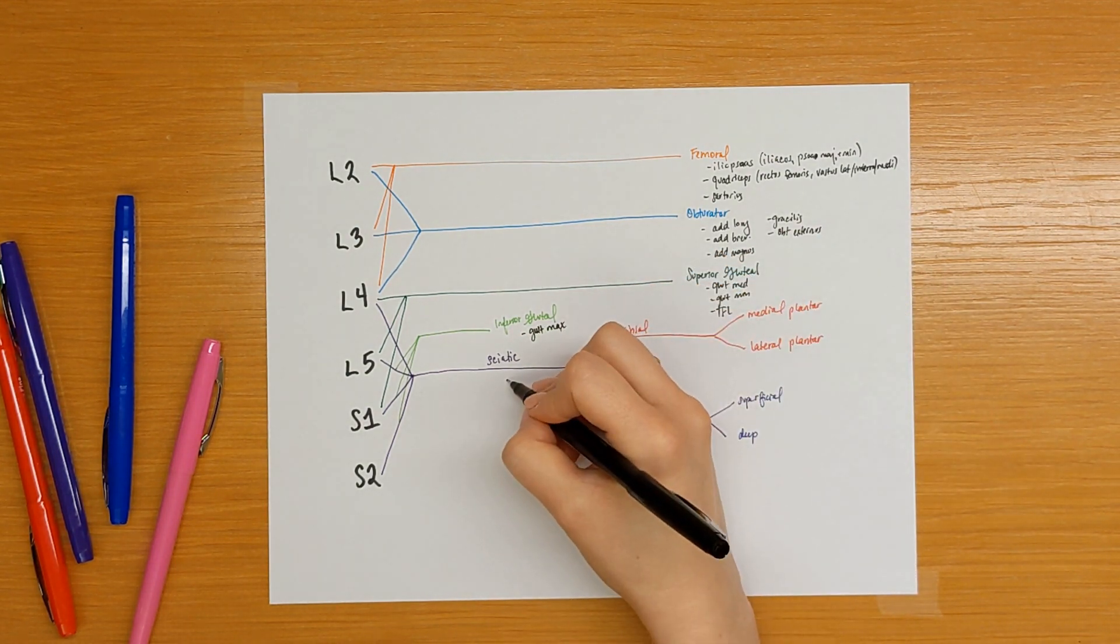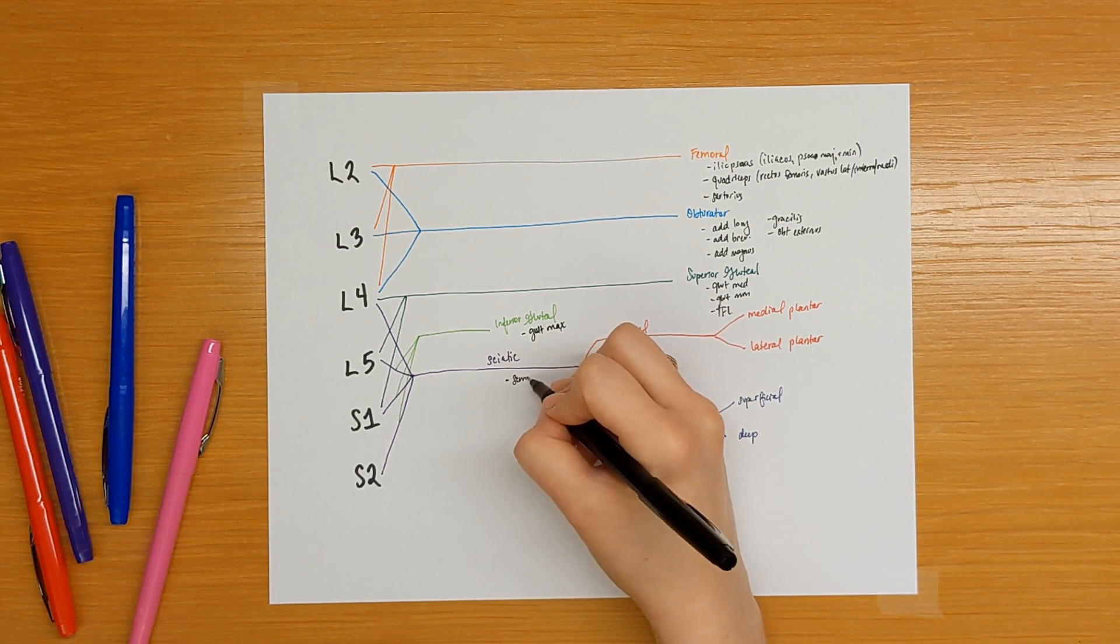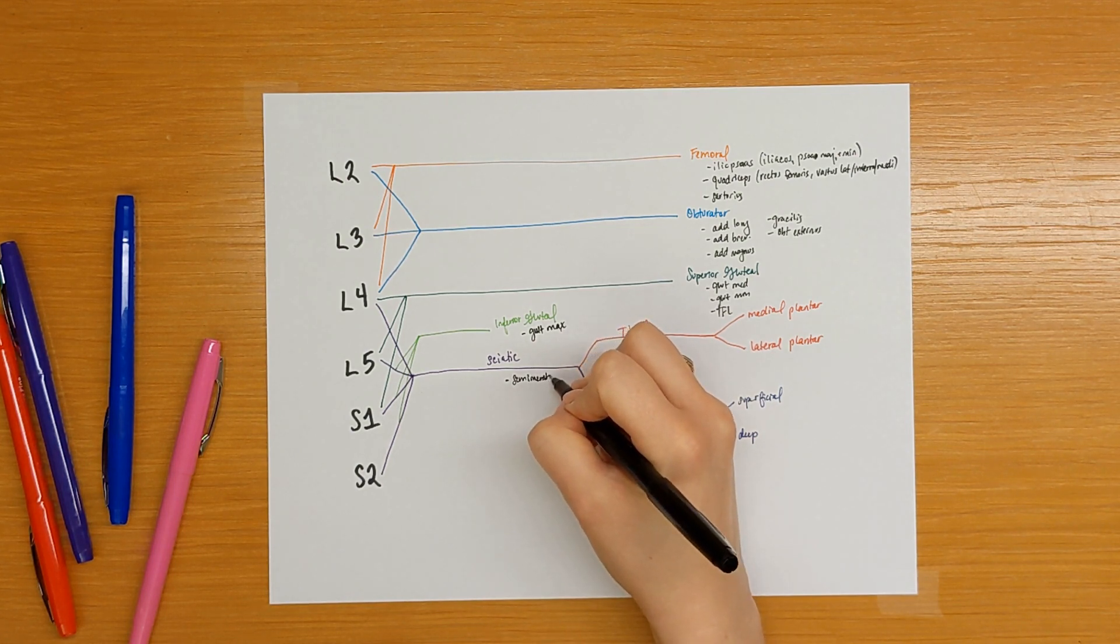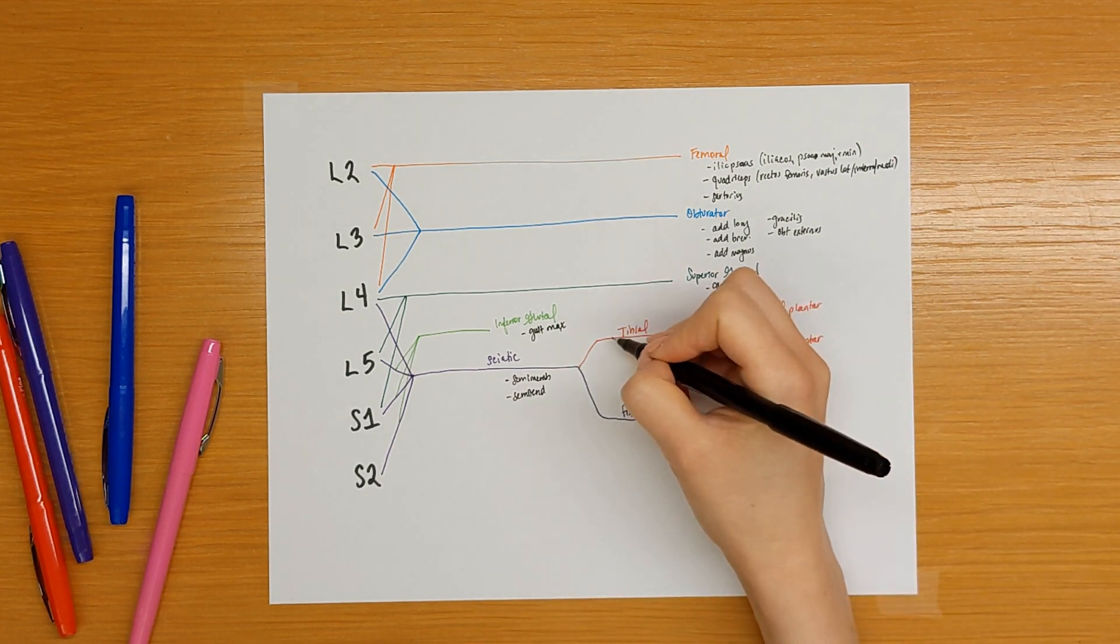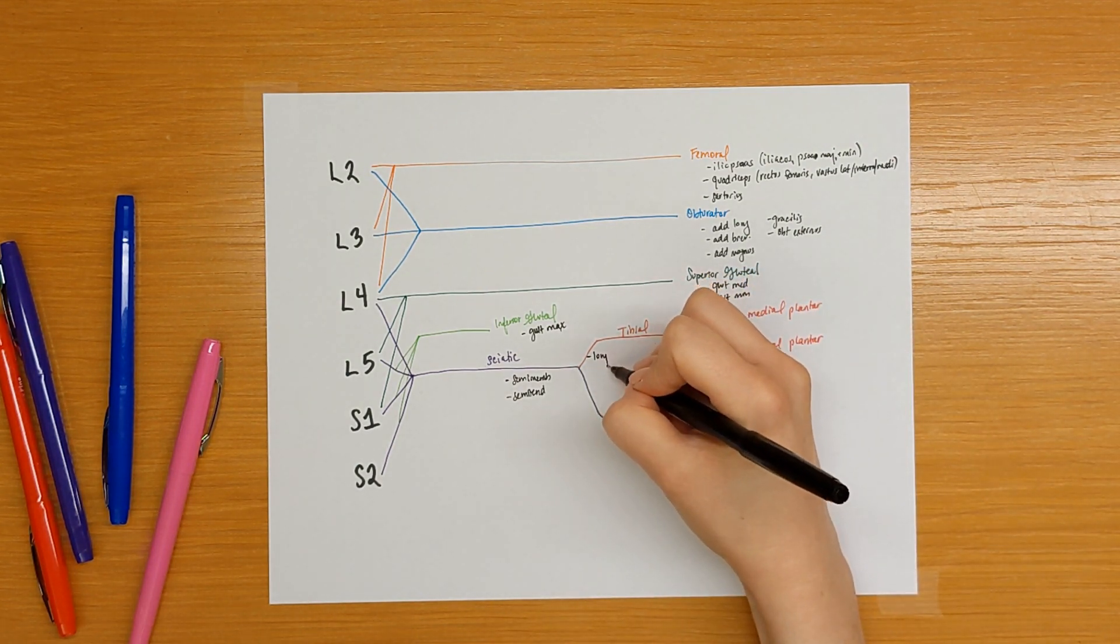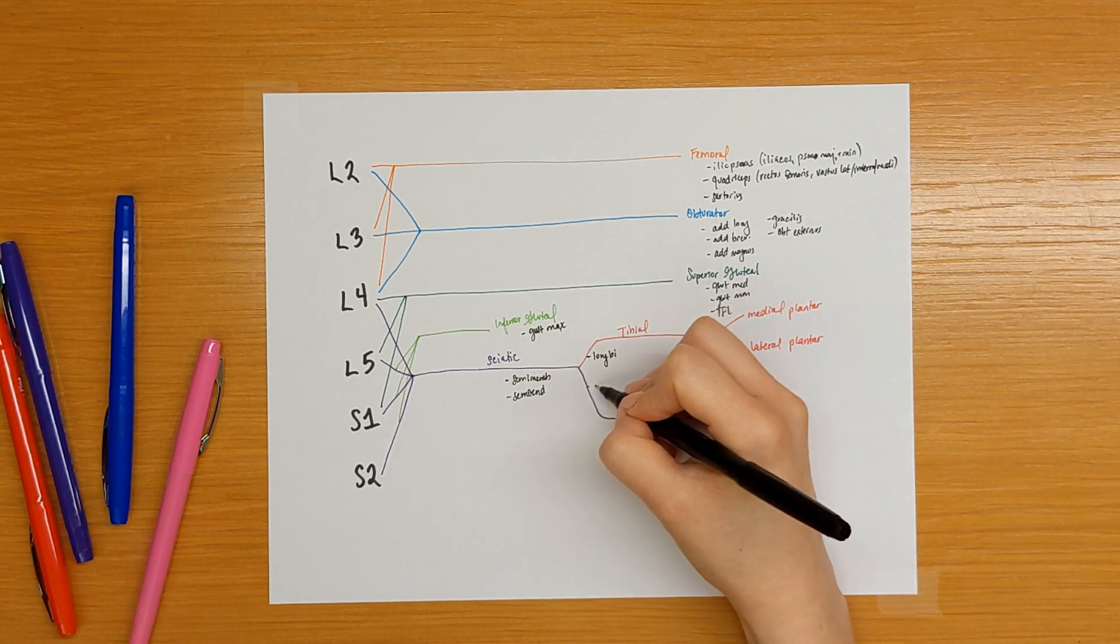The sciatic nerve innervates the semimembranosus and the semitendinosus portions of the hamstrings. Then the tibial portion innervates the long head of biceps, and the fibular nerve innervates the short head of biceps.